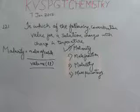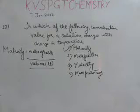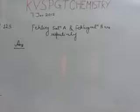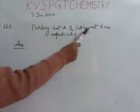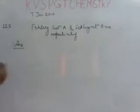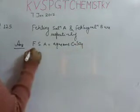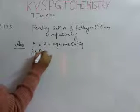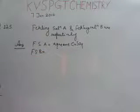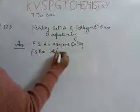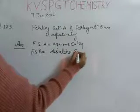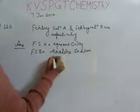So in the next question, it is asked to identify Fehling solution A and Fehling solution B. Friends, we know that Fehling solution A, what is that? It is aqueous copper sulfate. Now what is Fehling solution B? It is alkaline sodium potassium tartrate.